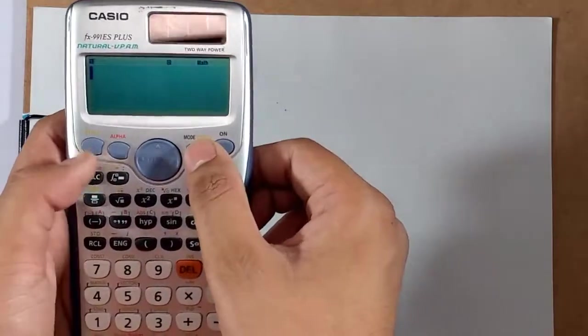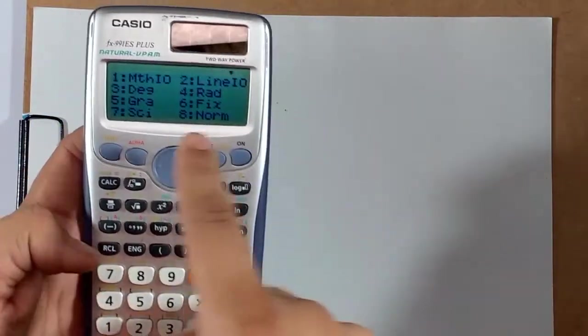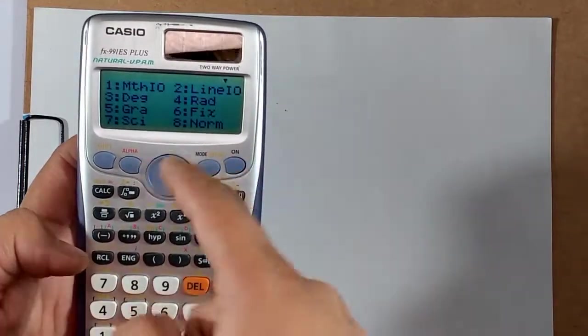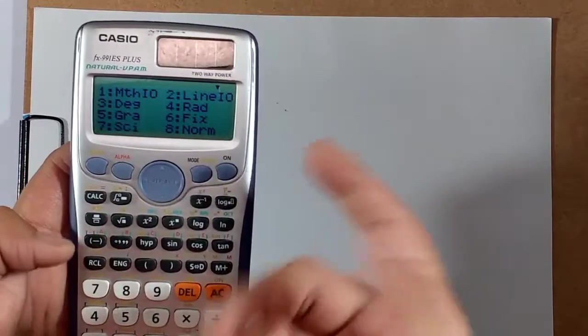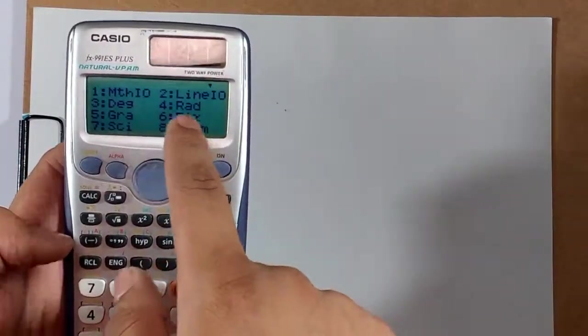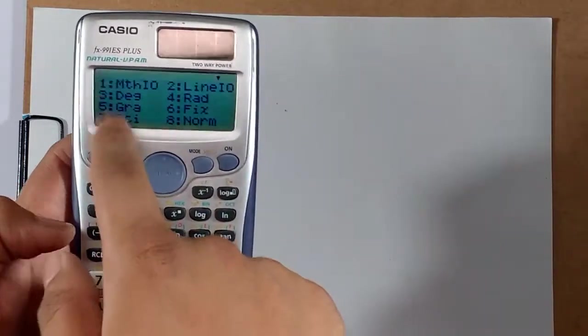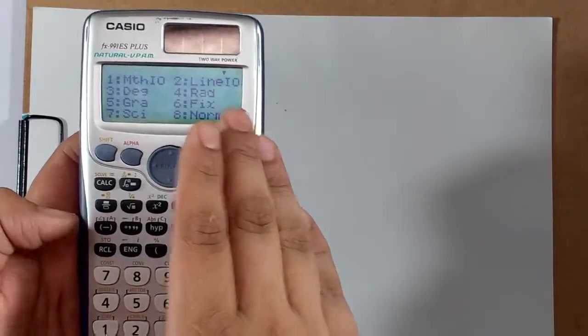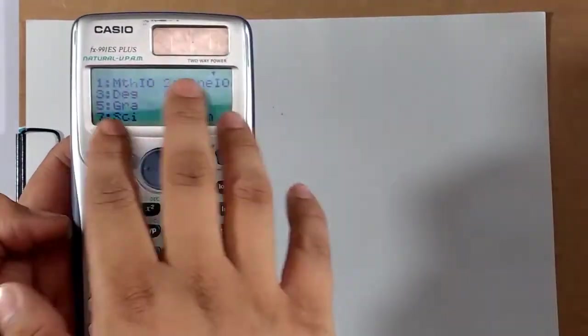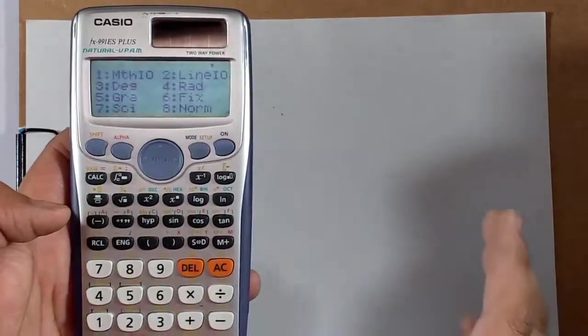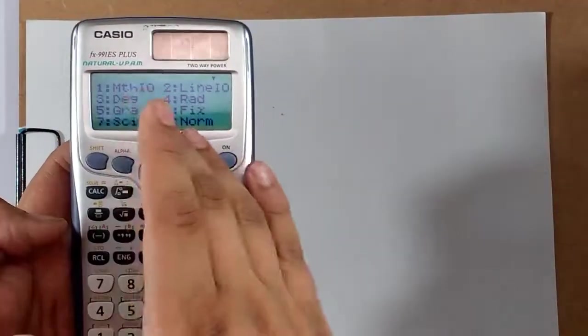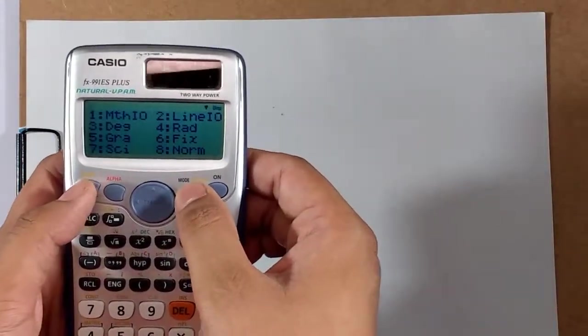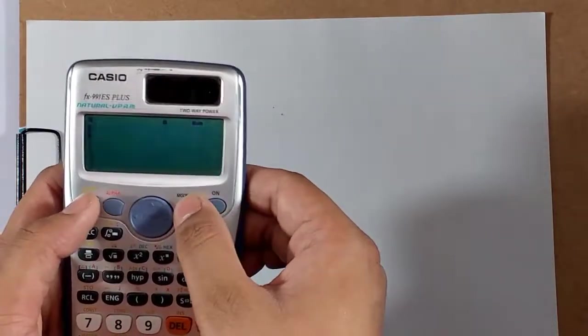Again go to setup, Line IO same thing. Third is degree, radian, or gradient if you want to input the angle in degrees, radians, or gradient. Fix is another function I'm going to discuss in later tutorials. Science is the function when using this as a scientific calculator solving 10 to the power things. This will give directly into the 10 to the power things. Norm means normal.